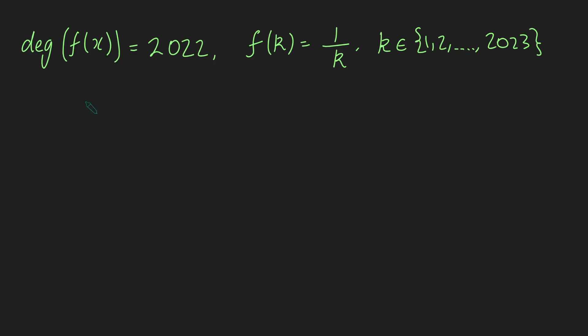Okay, so to begin this solution, we're going to introduce another function, g of x, and g of x is simply going to be x multiplied by f of x minus 1. Now, what can I say about g of x? Well, since f of x has degree 2022, g of x, because I've got x times f of x in it, this is going to have degree 2023.